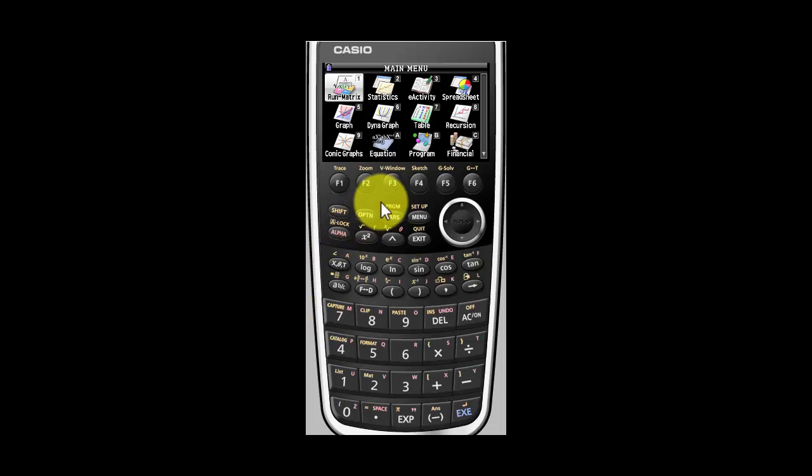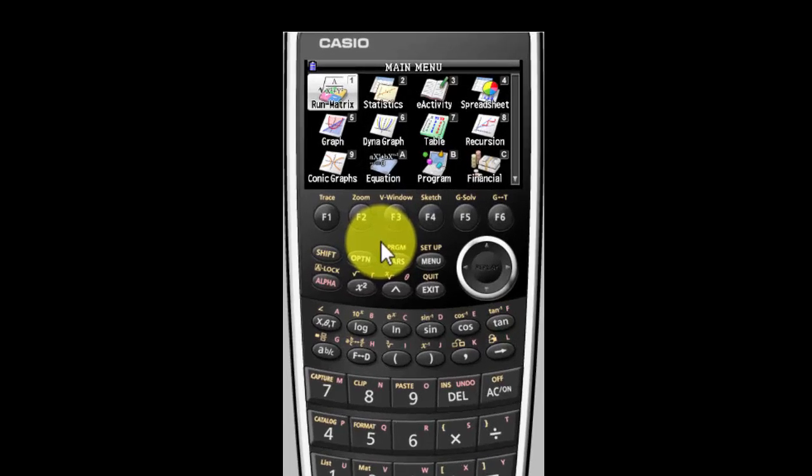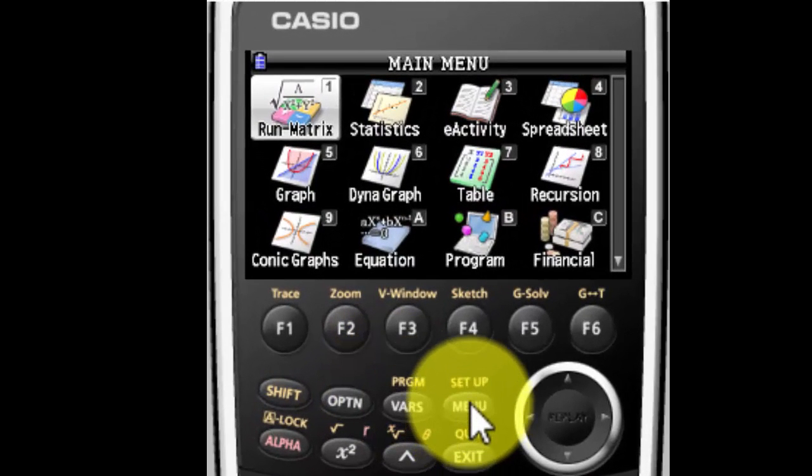Your calculator may look different than mine. It's okay. Once you know how to use one Casio graphing calculator, you can use all of them. If you don't see this screen, go ahead and hit your menu button right here.